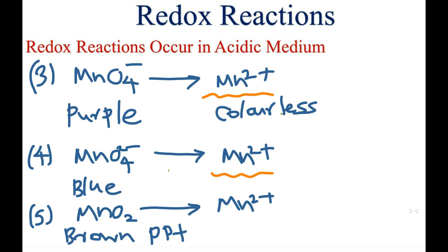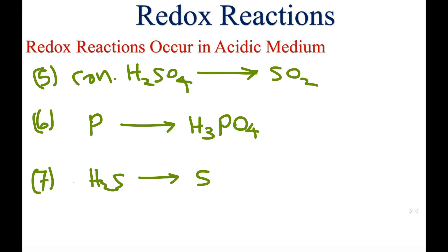In acidic medium, MnO₂ becomes Mn²⁺, so the brown color becomes a colorless solution. Concentrated sulfuric acid becomes sulfur dioxide: in H₂SO₄ sulfur takes an oxidation state of +6, and that becomes SO₂ which takes +4 oxidation state. This reaction is a reduction reaction.